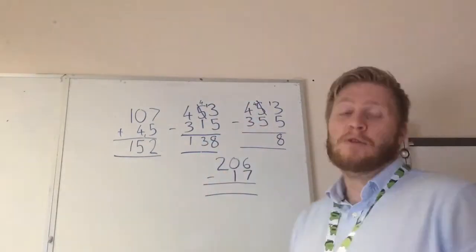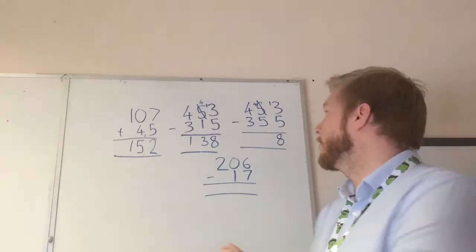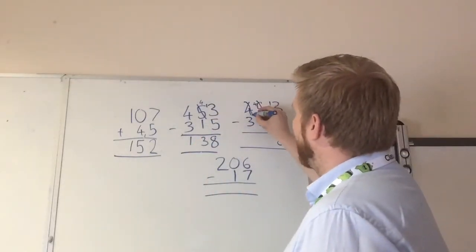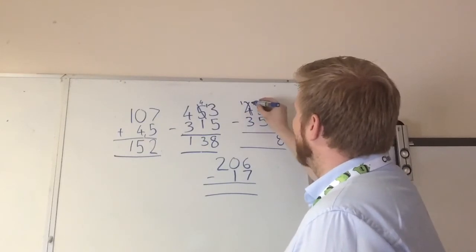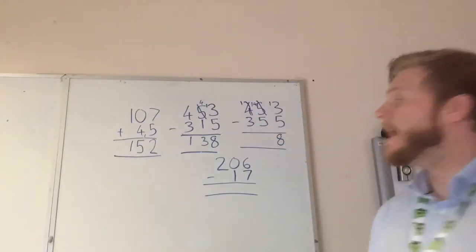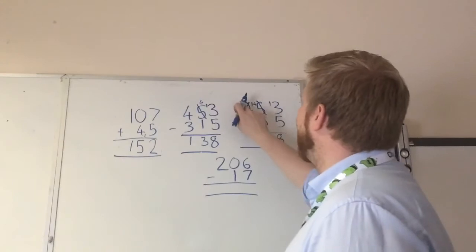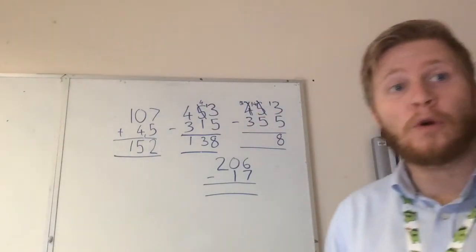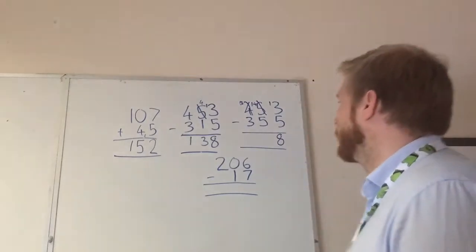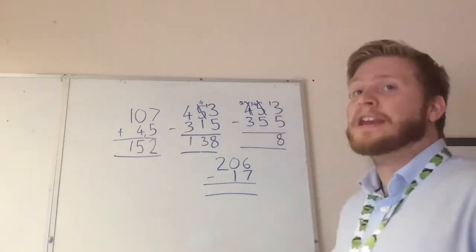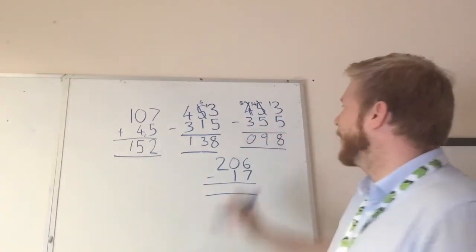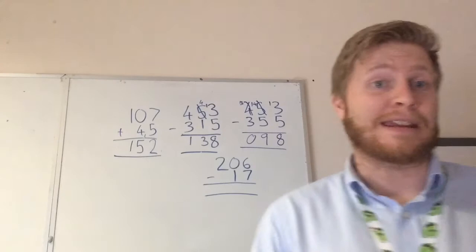We've got now 4 taking away 5, and we know we can't do that. So what we have to do is do exactly the same again. Now we'll lend 1 from the 100s column and put it in there. So now we have 14 tens. Okay, and obviously we've took 1 from the 100s. Instead of 400s, we've got 300s. Okay, so now 14 take away 5, and we know it's 9. And then we have 3 take away 3, which is 0. We get our answer, which is 98.